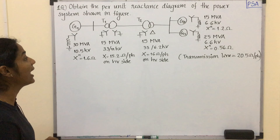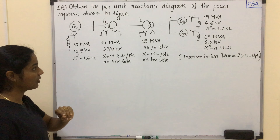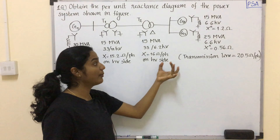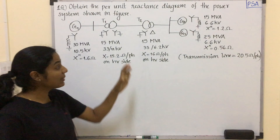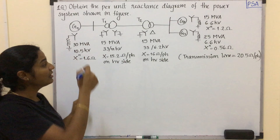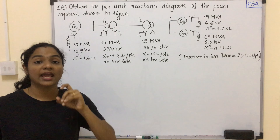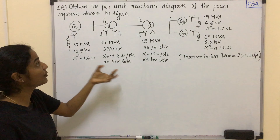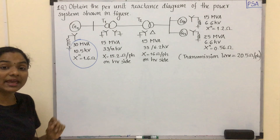Here, the per-unit reactance diagram of the system — the power system shown in this figure. We have one single line diagram and we also have to solve for the corresponding component ratings. We have to solve this per-unit reactance diagram. For the base values, we have to specifically mention what value to choose as the base. Normally, we will choose the first generator values as the base values.